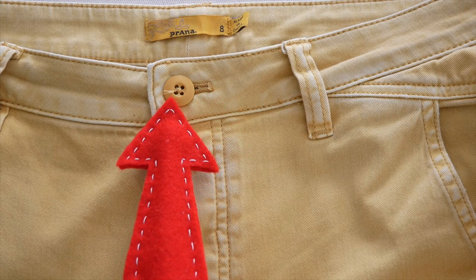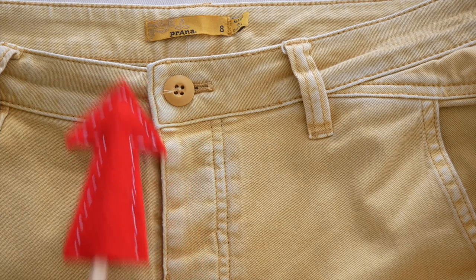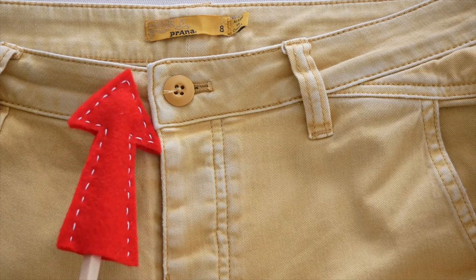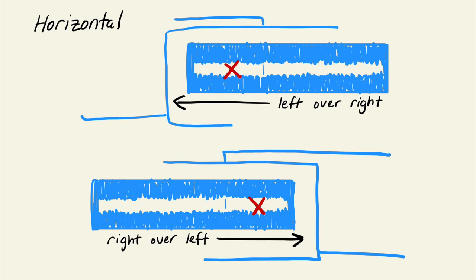The button overlaps the garment and not just in the center of a buttonhole. So if you have left over right, your button will be about an eighth inch from the left side of the buttonhole, one-eighth inch over. And the opposite, right over left, one-eighth inch over from the right side of the buttonhole.